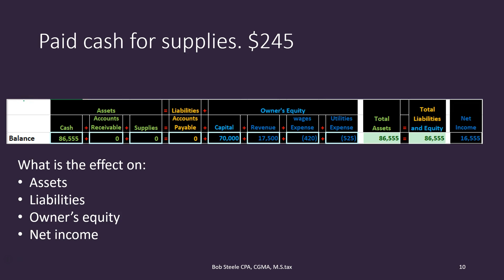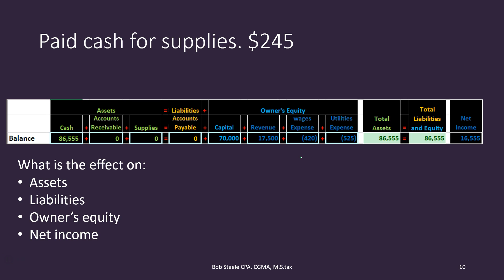We are going to record a transaction for cash paid for supplies. We purchased supplies and paid cash — $245. We'll record that in accordance with our accounting equation: assets equal liabilities plus owner's equity. Within assets we have cash, accounts receivable, and supplies. Within liabilities we have accounts payable. Within owner's equity we have our capital account and the income statement — revenue less expenses.